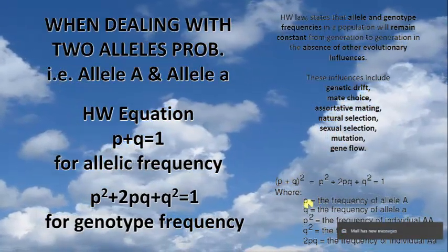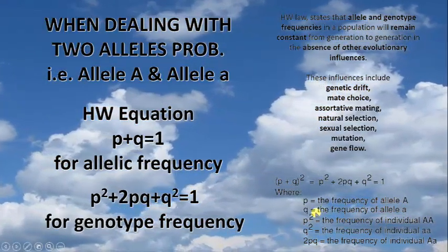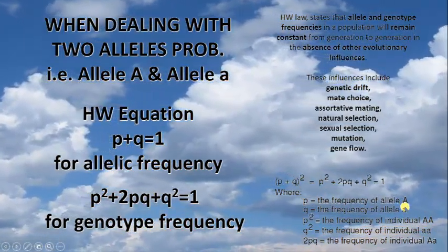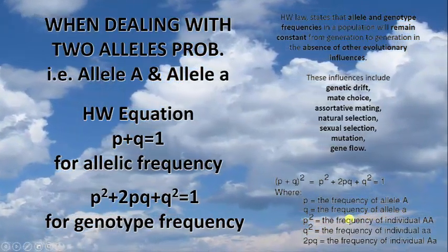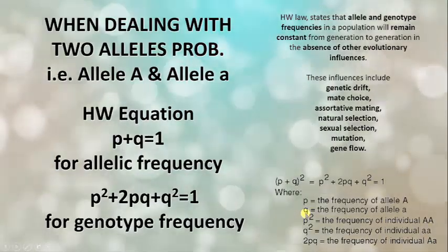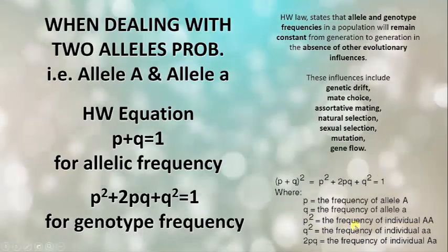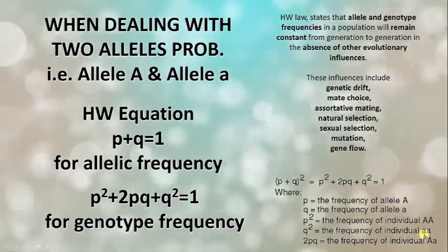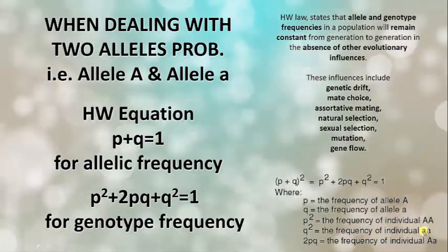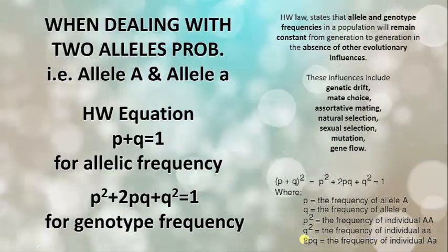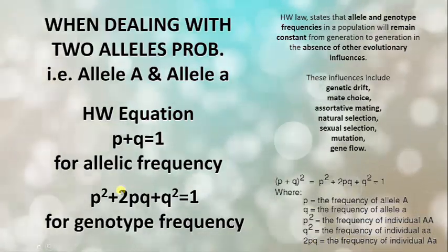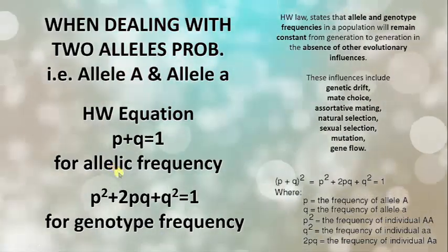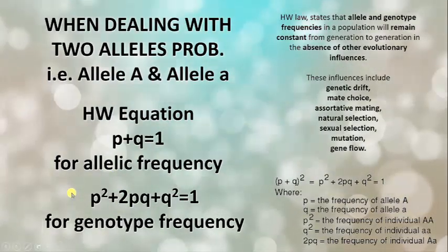Now, what we are more interested in is the solution of the problem. Small p is the frequency of allele capital A, and q is for allele small a. Now, p-squared stands for the frequency of the homozygous dominant individual AA; q-squared is for the recessive individual aa; and 2pq is for the frequency of the heterozygous individual.